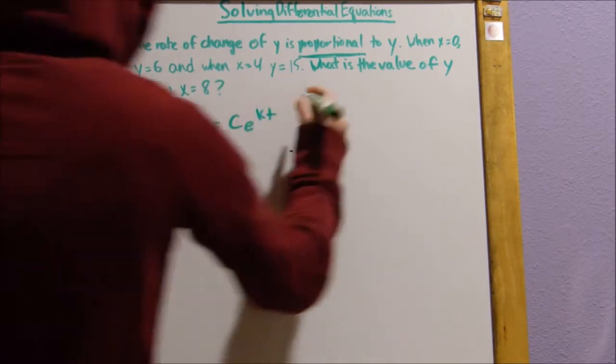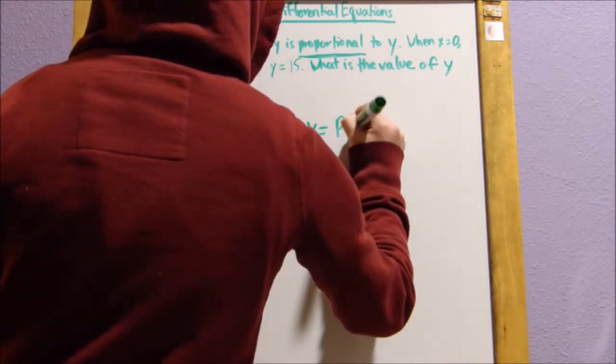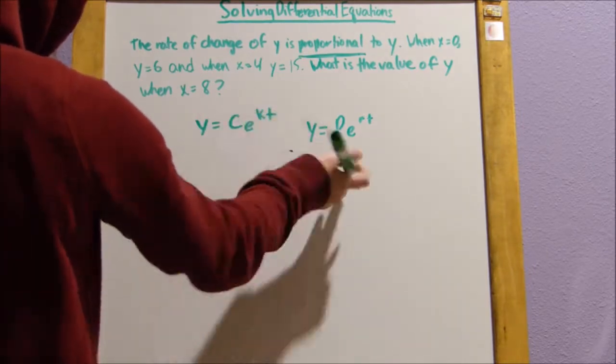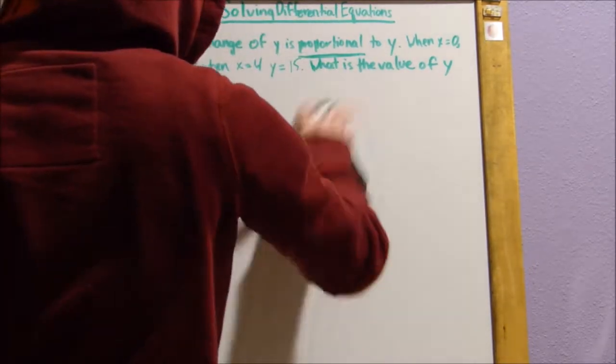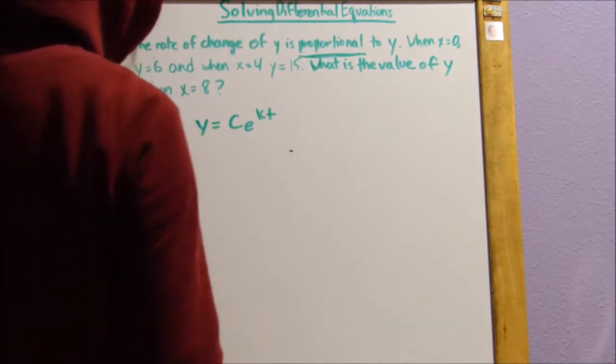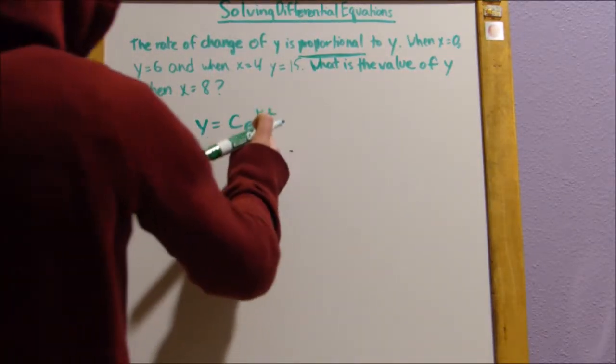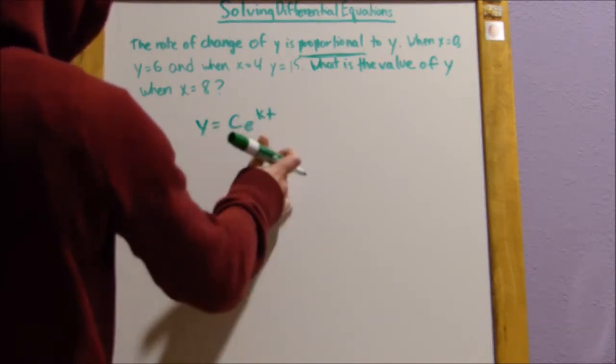I kind of get this equation mixed up with pert, which is pretty much the same thing, it just has different variables. So k is the proportionality constant, so it makes sense that we're going to use this.